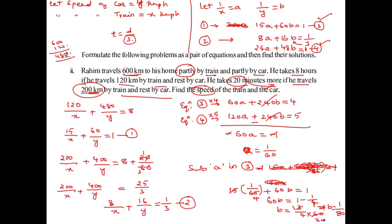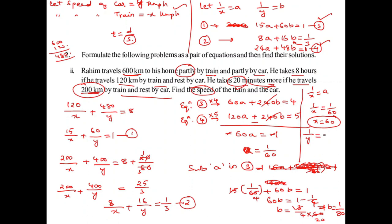Substituting back: 1 by x equals A equals 1 by 60, so x equals 60. This is the speed of the train. And 1 by y equals B equals 1 by 80, so y equals 80. This is the speed of the car. The speed of the train is 60 km/h and the speed of the car is 80 km/h.